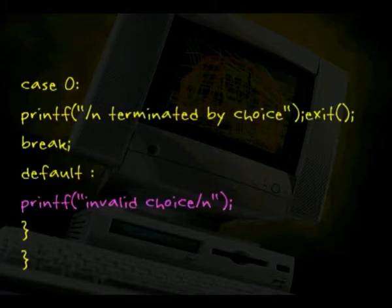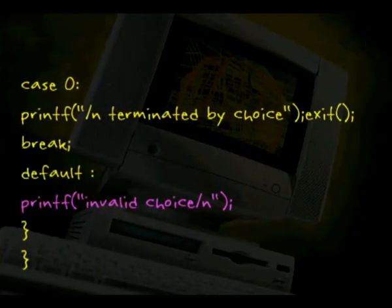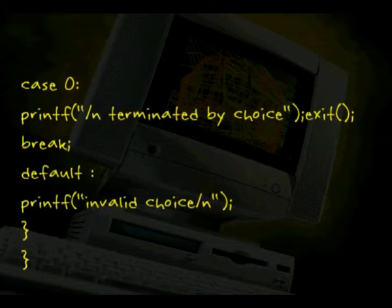And if case 0 is there which is terminated by choice, I do not have an option for 0. And if none of these cases, if I do not enter 0 or 1 or 2 or 3, automatically the default case of invalid choice will be printed. This is how a switch case construct can be used.